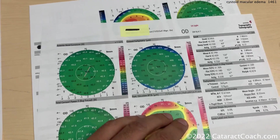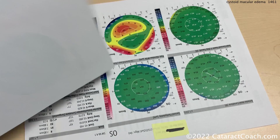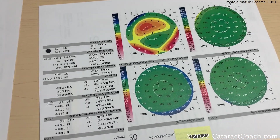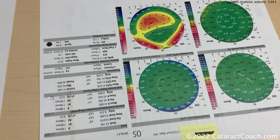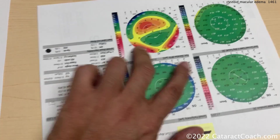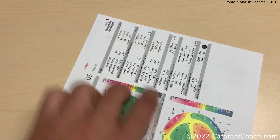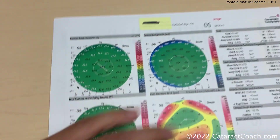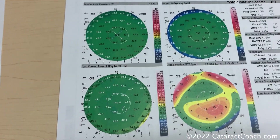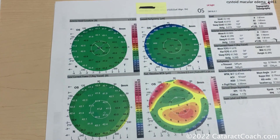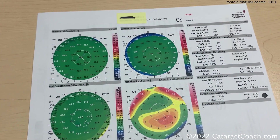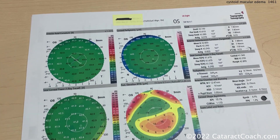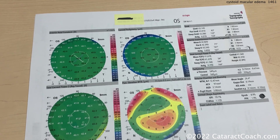Let's do the same for the left eye. For the left eye, it's going to be the same thing — good looking scans, normal looking cornea, good pachymetry. Everything looks clean. I'm ready to do this cataract for this patient.